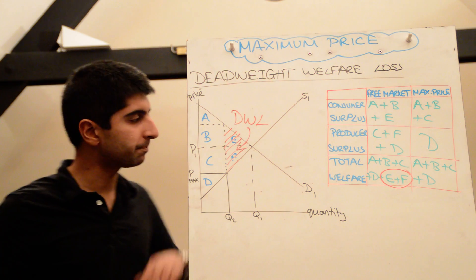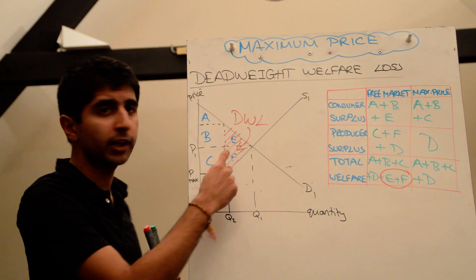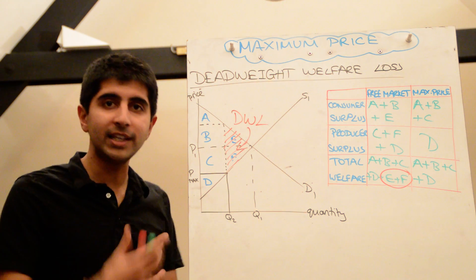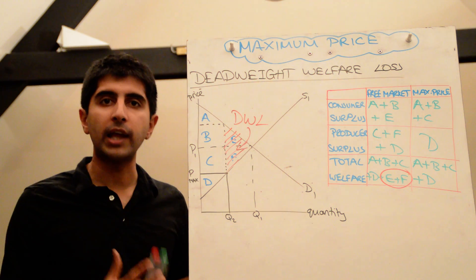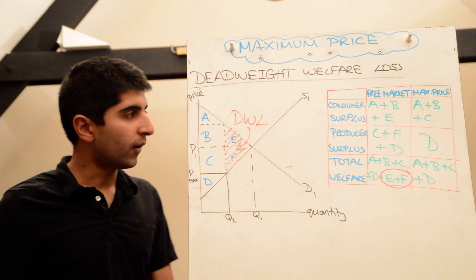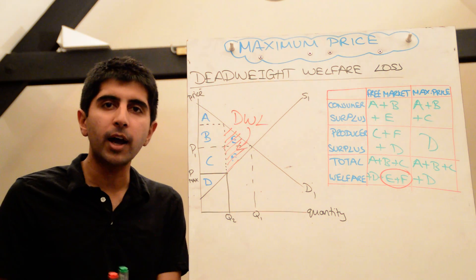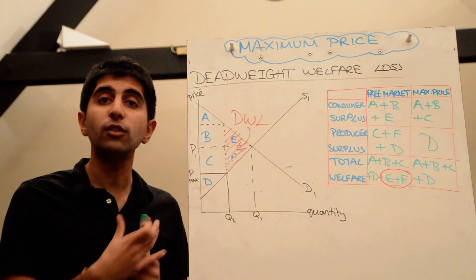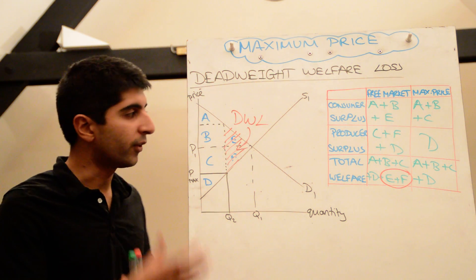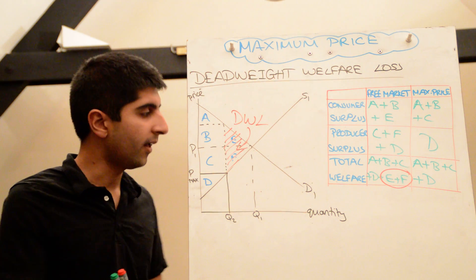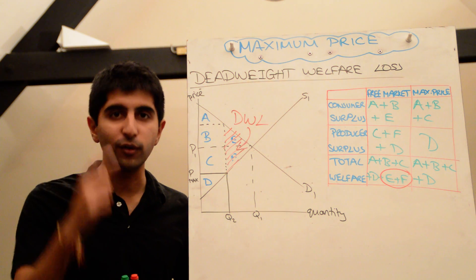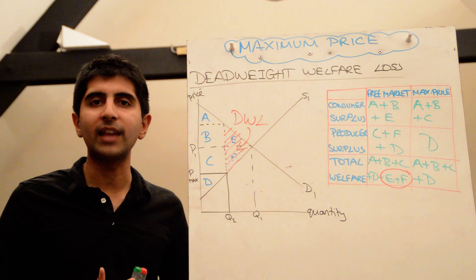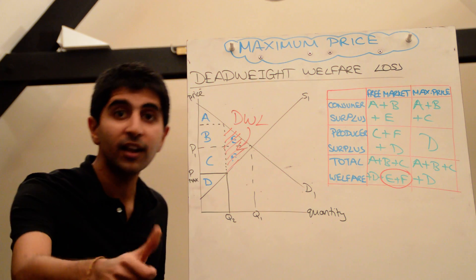So any time you draw a maximum price diagram, you can shade in this triangle, you can call it a deadweight loss, and if you need to, you now can explain why a deadweight loss occurs. Any time we intervene in markets, any time governments get involved and distort market outcomes, when before efficient resource allocation was taking place, there is always going to be a deadweight loss in society. This video explains it for a maximum price. Hopefully that's clear and concise. Thanks for watching, see you all next time.